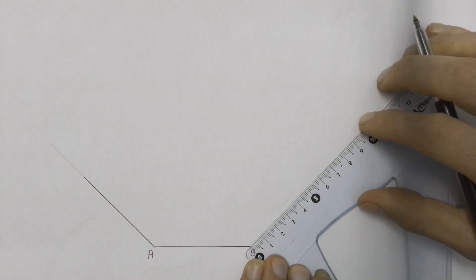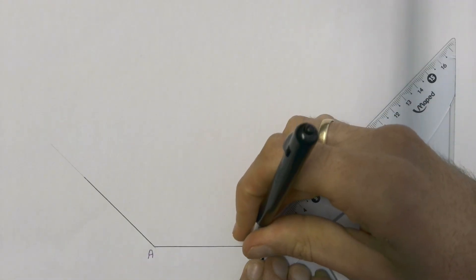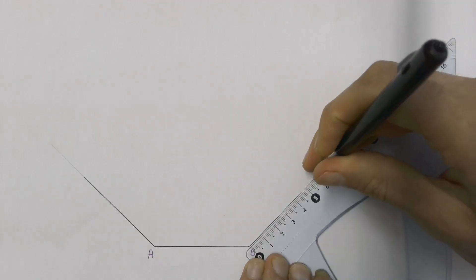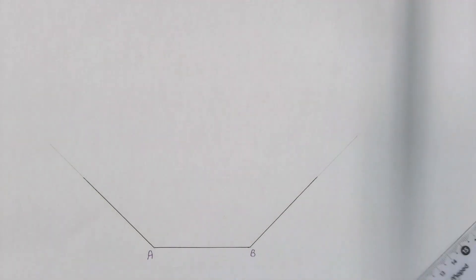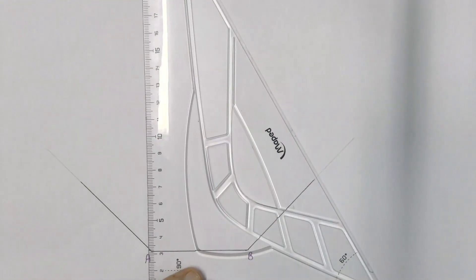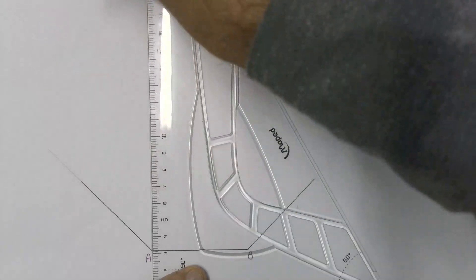Once we have these two lines drawn, we are then going to project from point A and point B straight up because we can use those two projections later on.